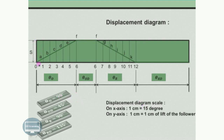The out stroke is 90 degrees, so 90 divided by 15 gives 6 cm, divided into 6 equal parts. The dwell is 45 degrees, so 45 divided by 15 gives 3 cm. The return stroke is 90 degrees, so 90 divided by 15 again gives 6 cm, and we have divided that return stroke also into 6 equal parts, numbered 6, 7, 8, 9, 10, 11, and 12.